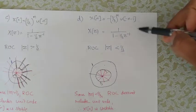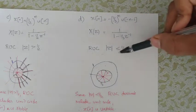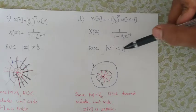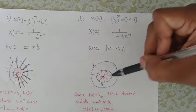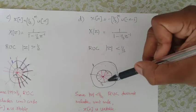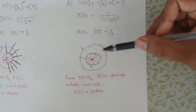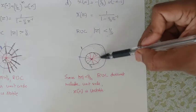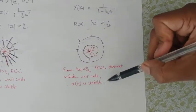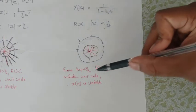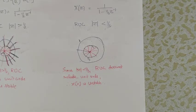Last example: when the ROC does not include the unit circle — that is, when |z| is less than 1 — the signal X(z) is unstable. Since the modulus is less than 1, X(z) is unstable. This covers the four examples. Thank you.